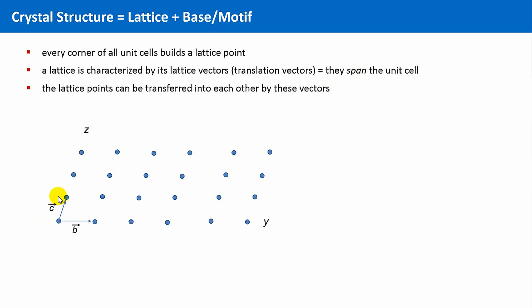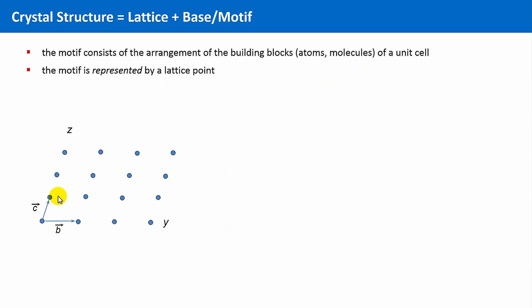Now only the motif is left. Our unit cells are not empty, they are filled with something. And this is called the motif. The motif consists of the arrangement of the building blocks of a unit cell. So, this means normally some atoms or a molecule, but in principle, it could be everything. Like this car, for instance.